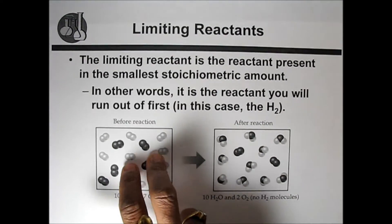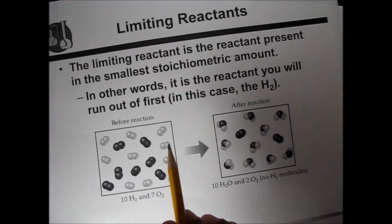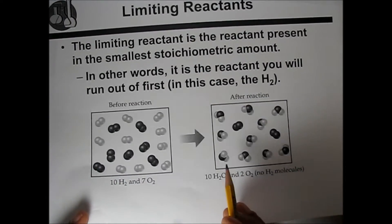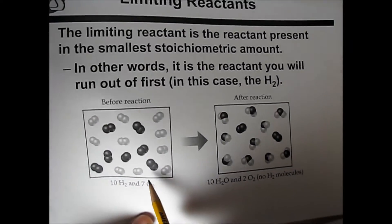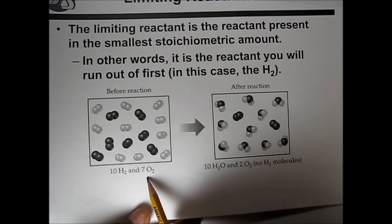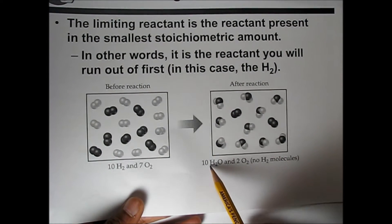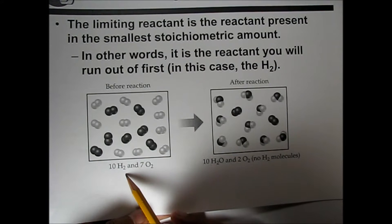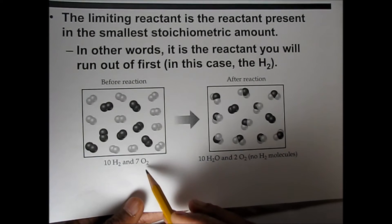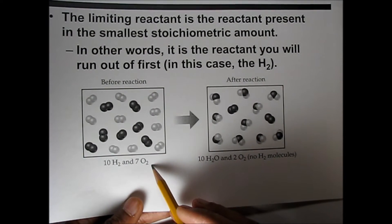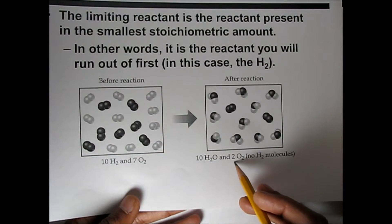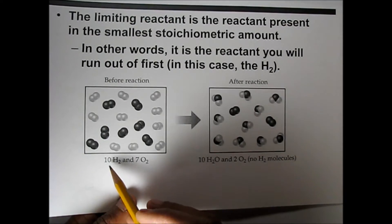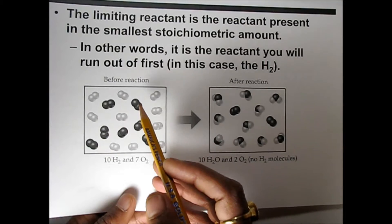The limiting reactant is the reactant present in the smallest stoichiometric amount — in other words, it is the reactant you will run out of first. For example, before the reaction if we have ten hydrogen molecules and seven oxygen molecules, how many water molecules will form? Ten water molecules will form, because twenty hydrogen atoms react with fourteen oxygen atoms, consuming ten oxygen molecules, and two oxygen molecules remain.